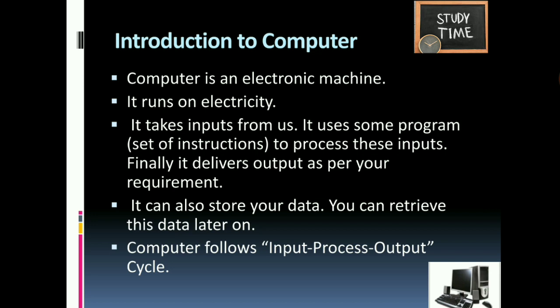Introduction to computer — what is a computer? A computer is an electronic machine. It runs on electricity. It takes input from us, processes a set of information or instructions, and delivers output as per our requirement. It can also store our data, which you can retrieve later. The computer follows the input-process-output cycle.